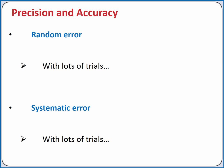Systematic error does not average out with multiple trials. So we want to be very careful in the way we design experiments and conduct them to minimize systematic error.